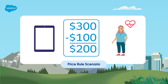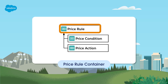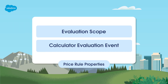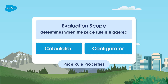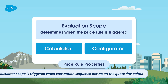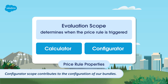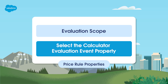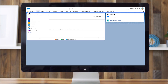The first step to build a price rule is to create a price rule through field selection and related lists. The price rule record acts as a container for the price condition and price action records, which work together to determine whether a quote matches the conditions outlined in the price rule. The price rule record also has critical properties including evaluation scope and the calculator evaluation event. With evaluation scope, you can choose either the calculator or configurator scope.